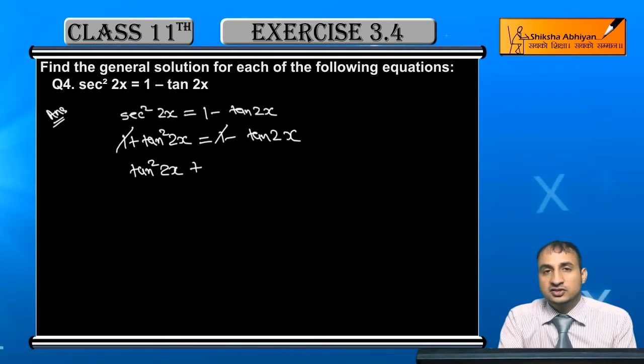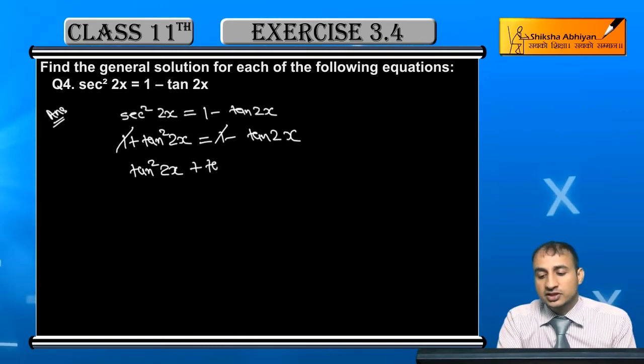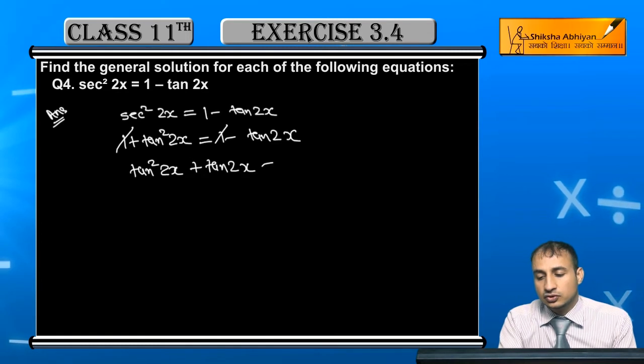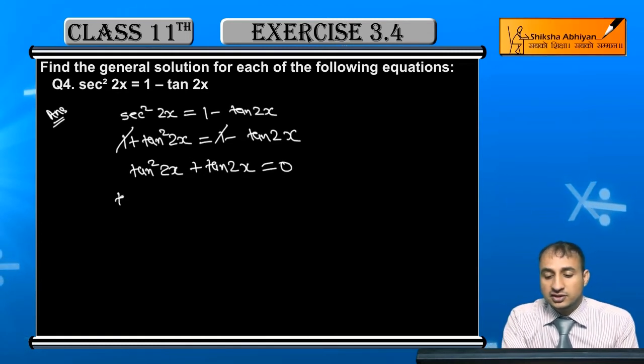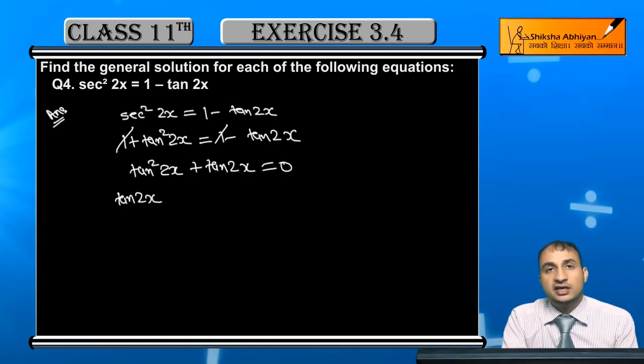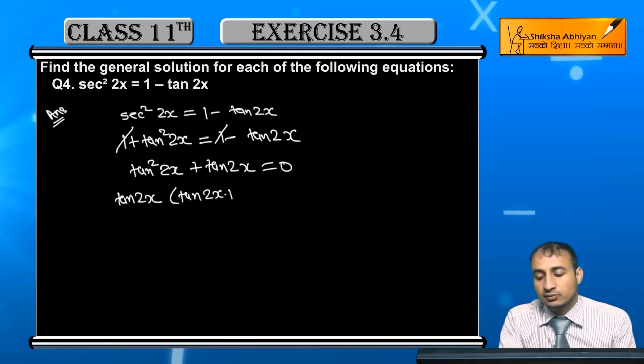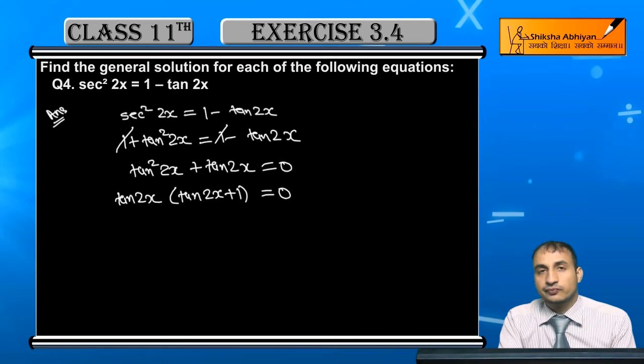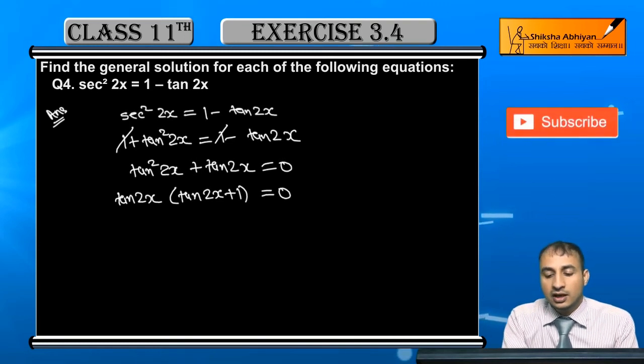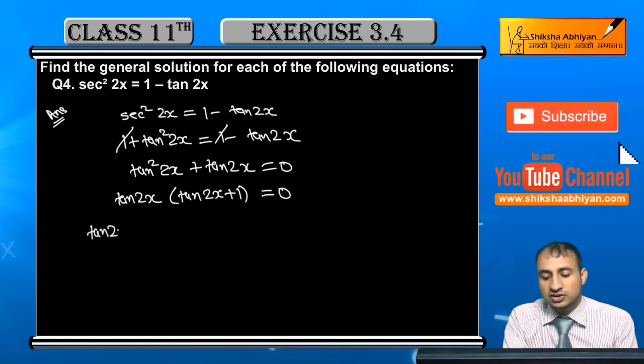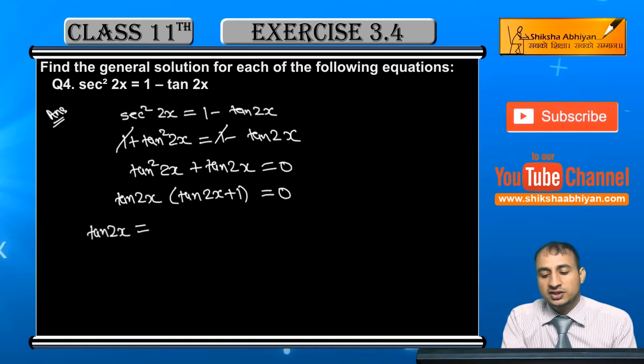Now tan2x is common. I will factor: tan2x(tan2x + 1) = 0. So here are two possibilities. Either tan2x = 0.